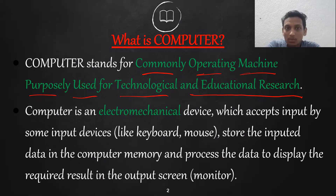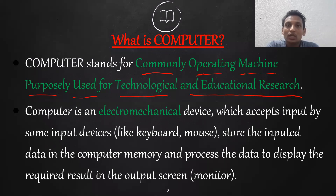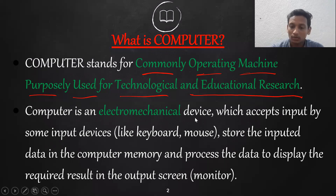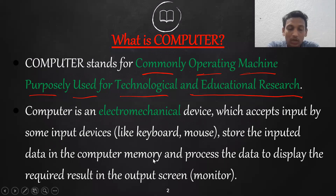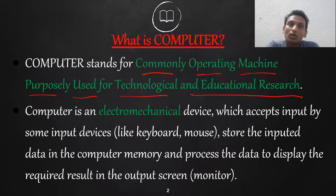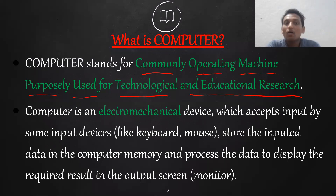The computer stores data in memory, processes it, finds the result, and displays the result on a display screen as output. So the computer definition: a computer is an electromechanical device which accepts input by input devices like keyboard and mouse, then stores the data in computer memory.